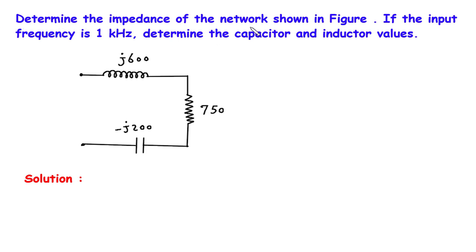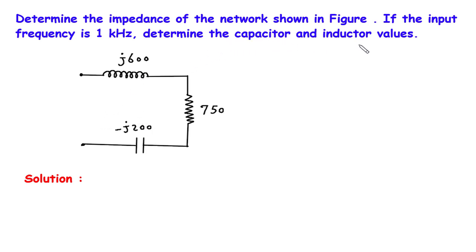Determine the impedance of the network shown in the figure. If the input frequency is 1 kilohertz, determine the capacitor and inductor values. This is the circuit. As we can see, it is a RLC circuit. We have to determine the value of capacitor and inductor if the frequency is 1 kilohertz.